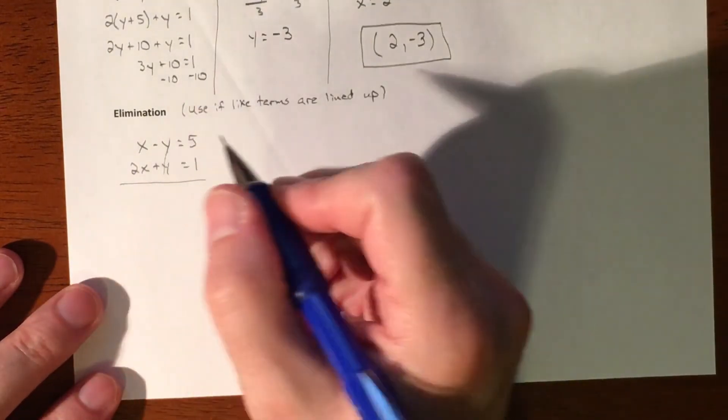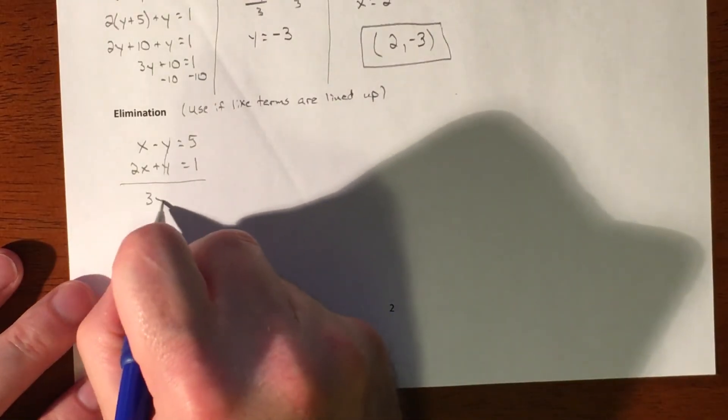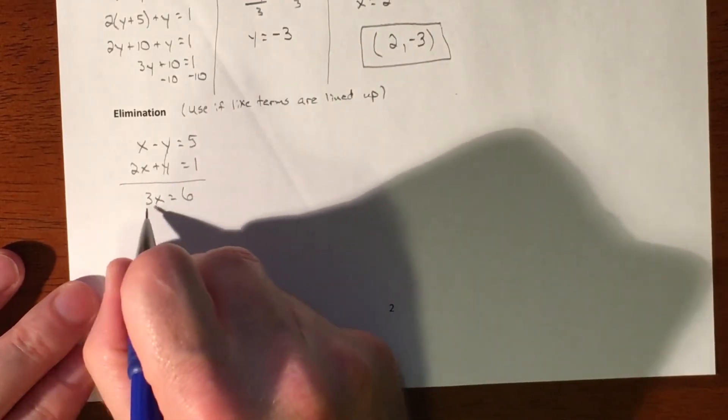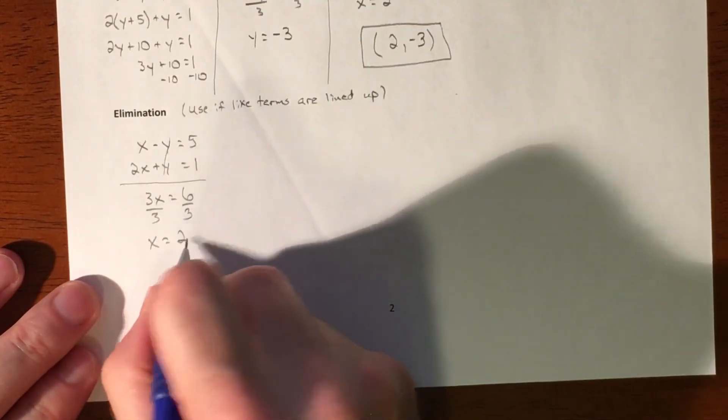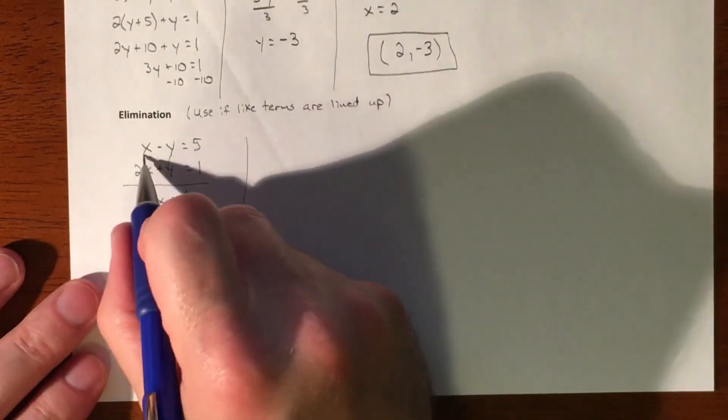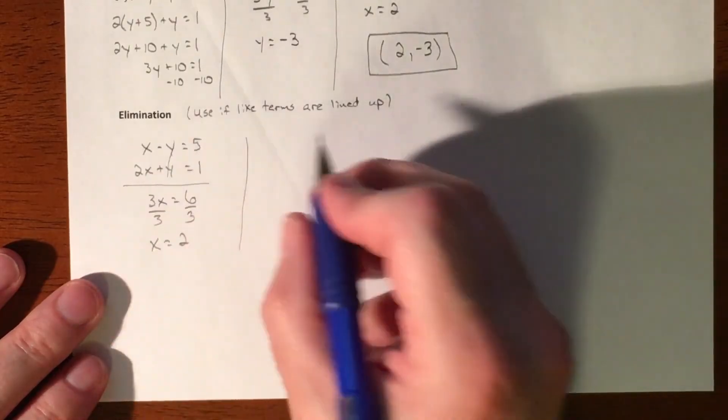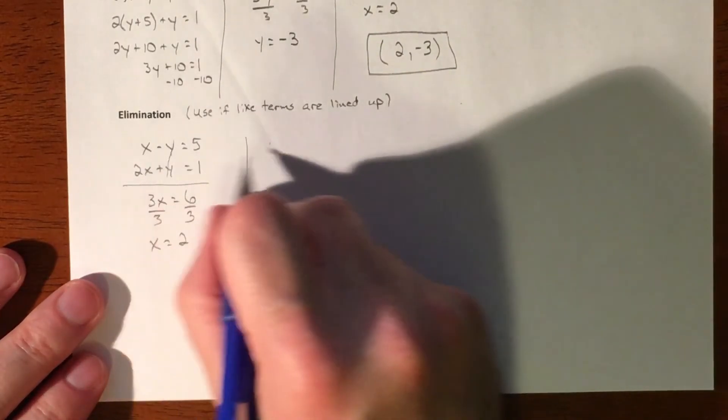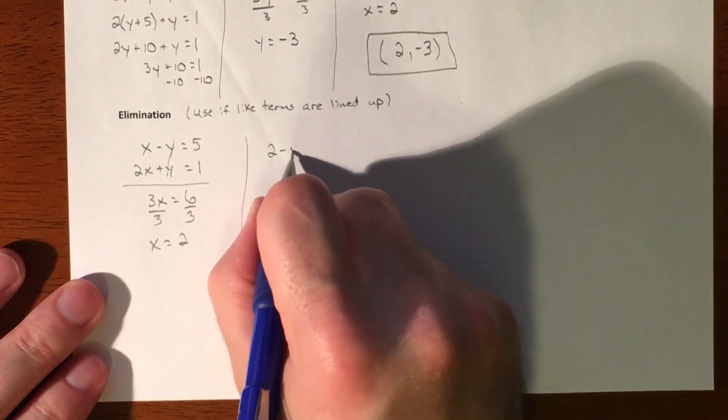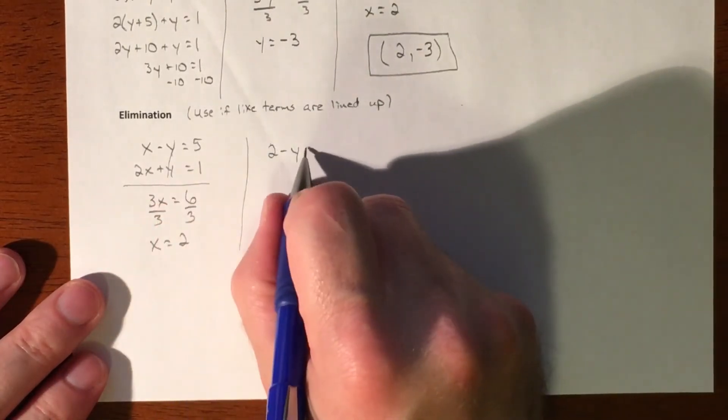We'll have some other examples of how do we deal with it when it's not. But right now, you combine that, your y's go away, and you have 3x equaling 6, divide by 3, x equals 2. So then we go back to either of the two equations. Top one looks a little bit gentler. And so instead of x, we plug in 2 minus our y equals 5.